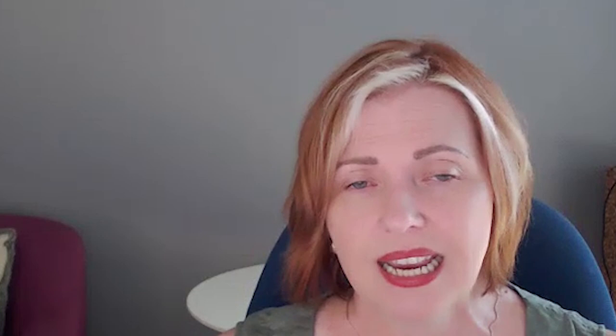The contingency view is distinguished from the classical perspective. The classical view assumed a universalist view — management concepts were thought to be universal. In the contingency view, each situation is believed to be unique, and it tells us that what works in one setting might not work in another. Total quality management is another concept that permeates modern management thinking. The quality movement is strongly associated with Japanese companies but emerged due to the influence of Americans after the Second World War.